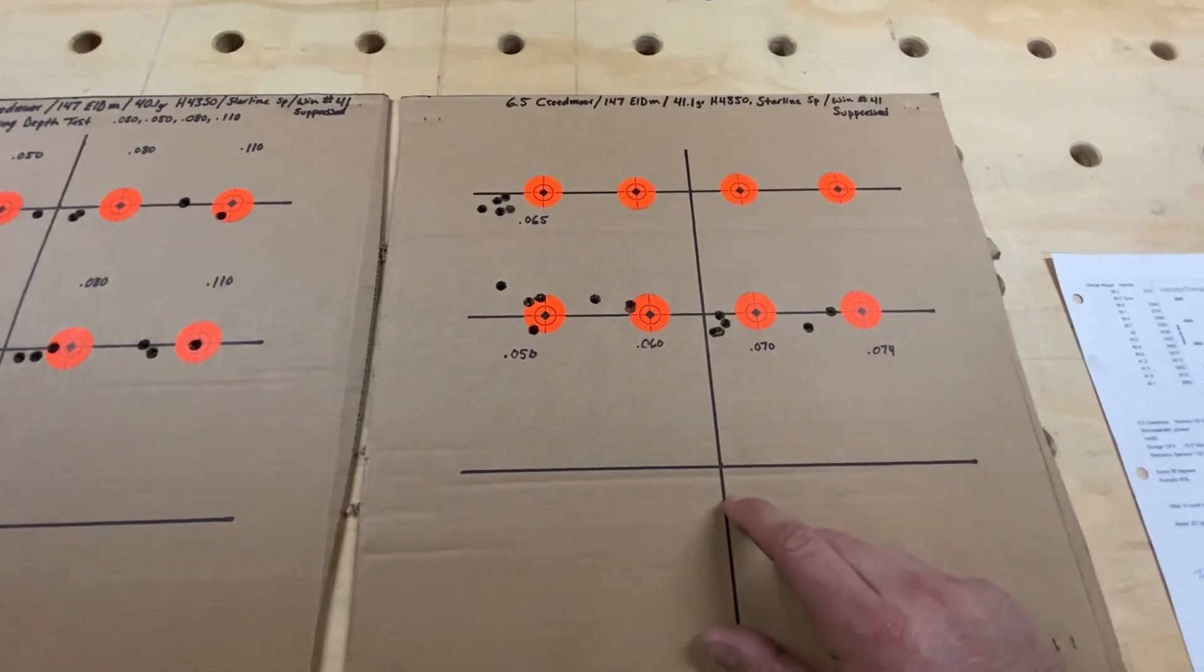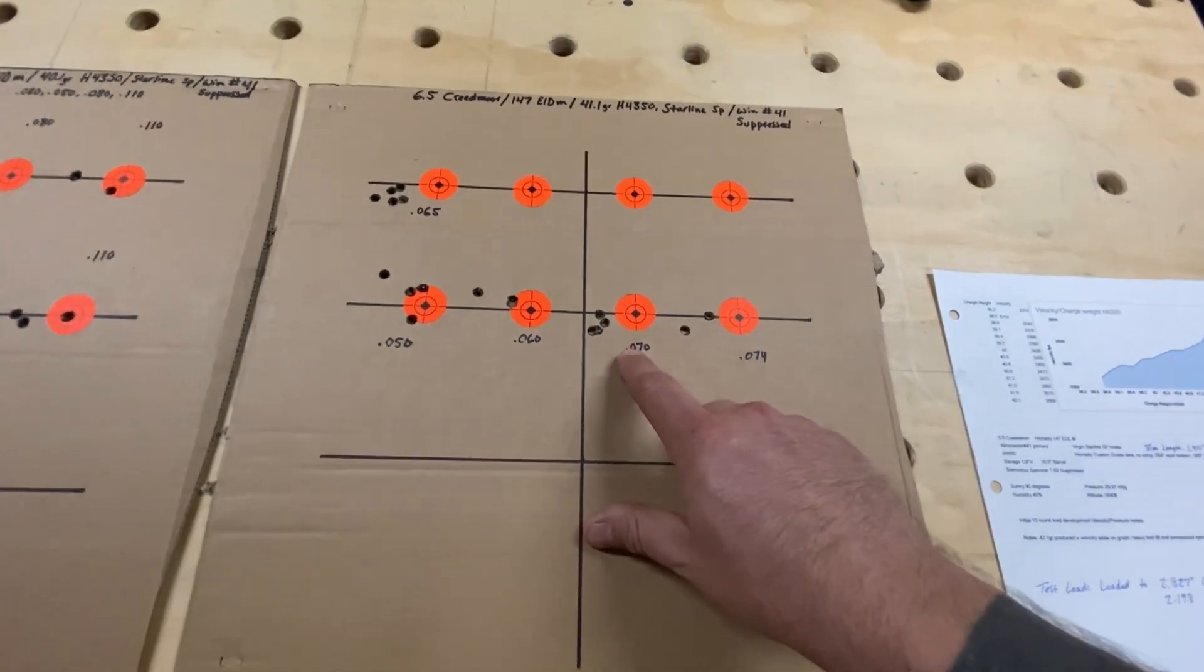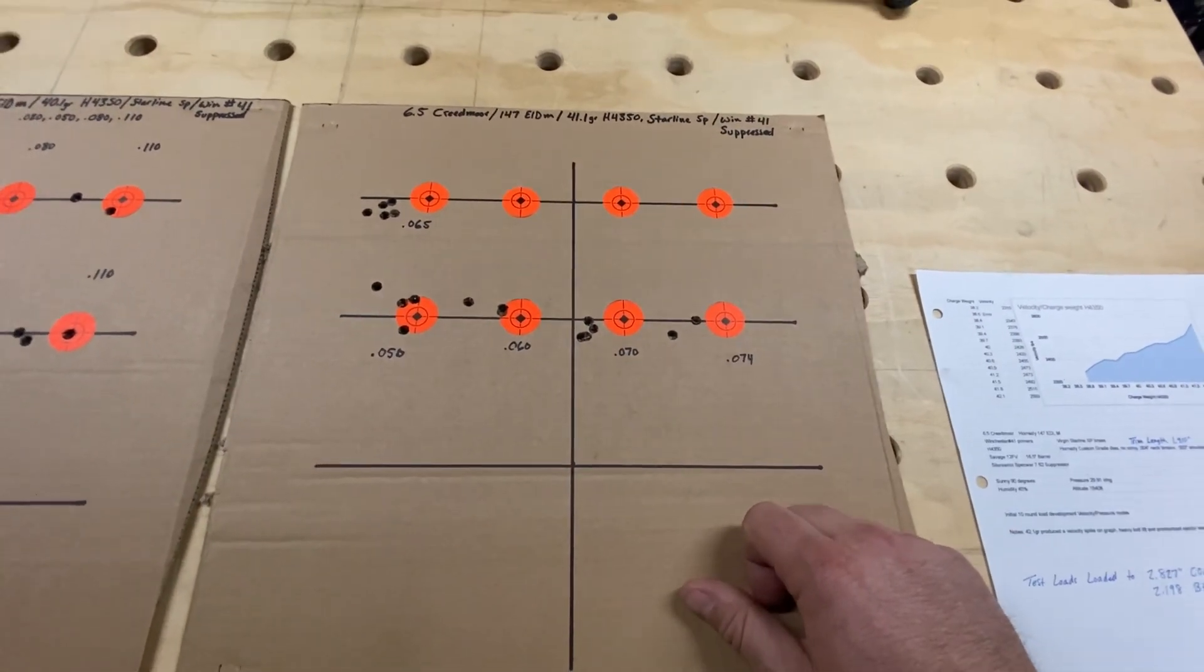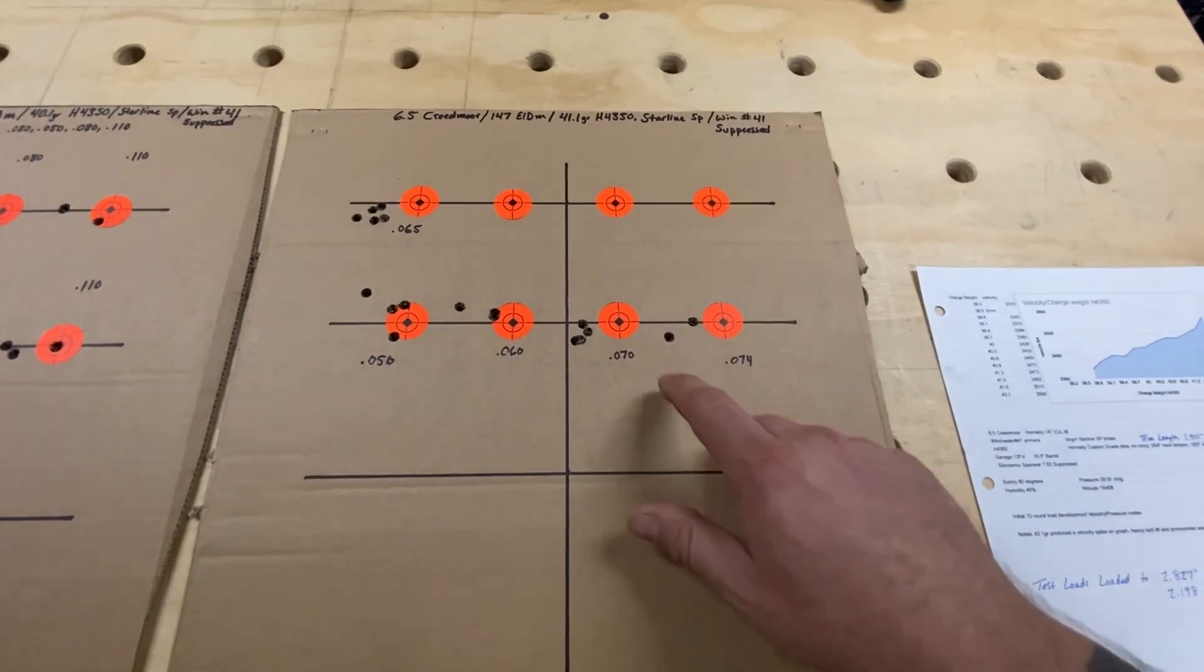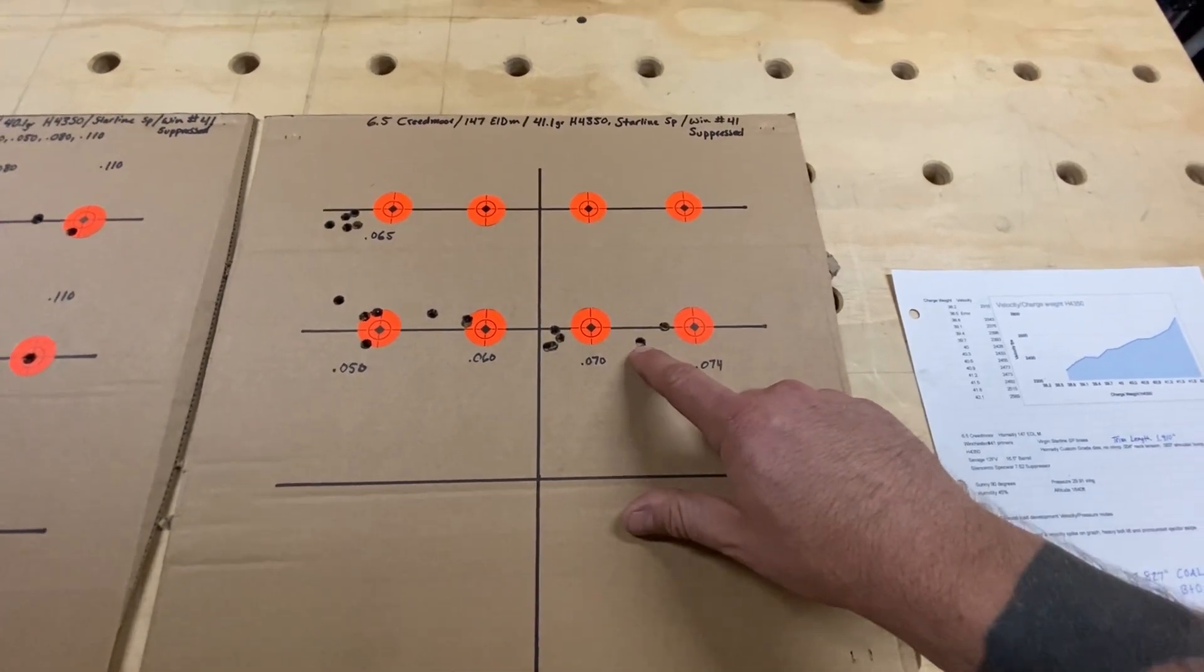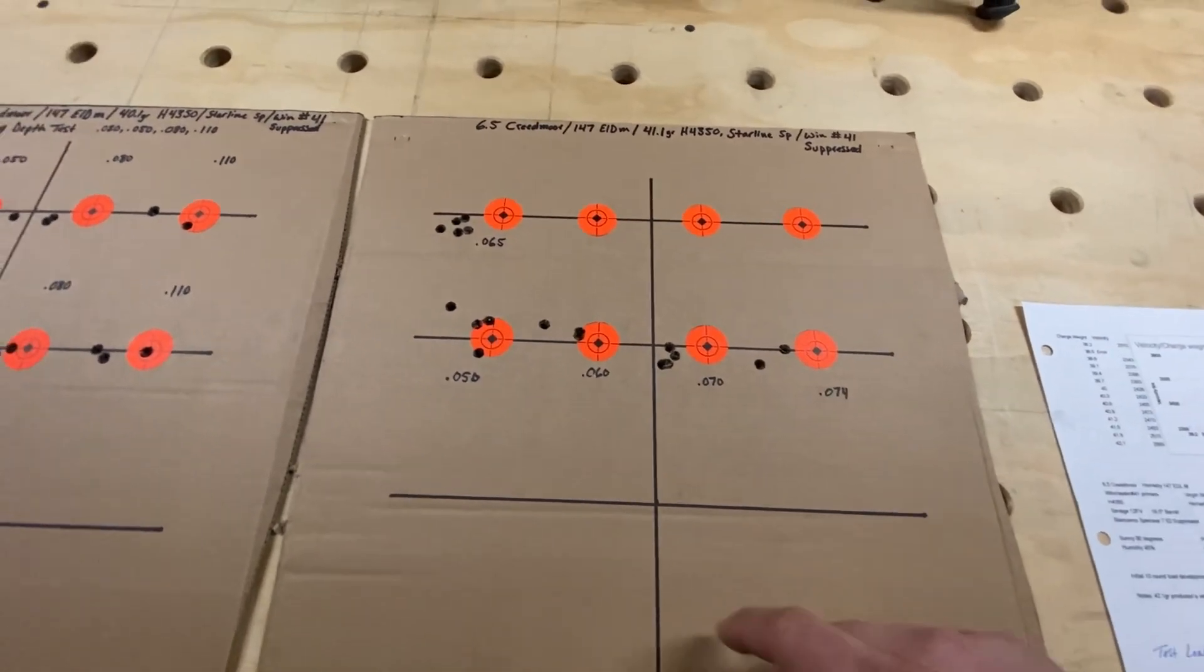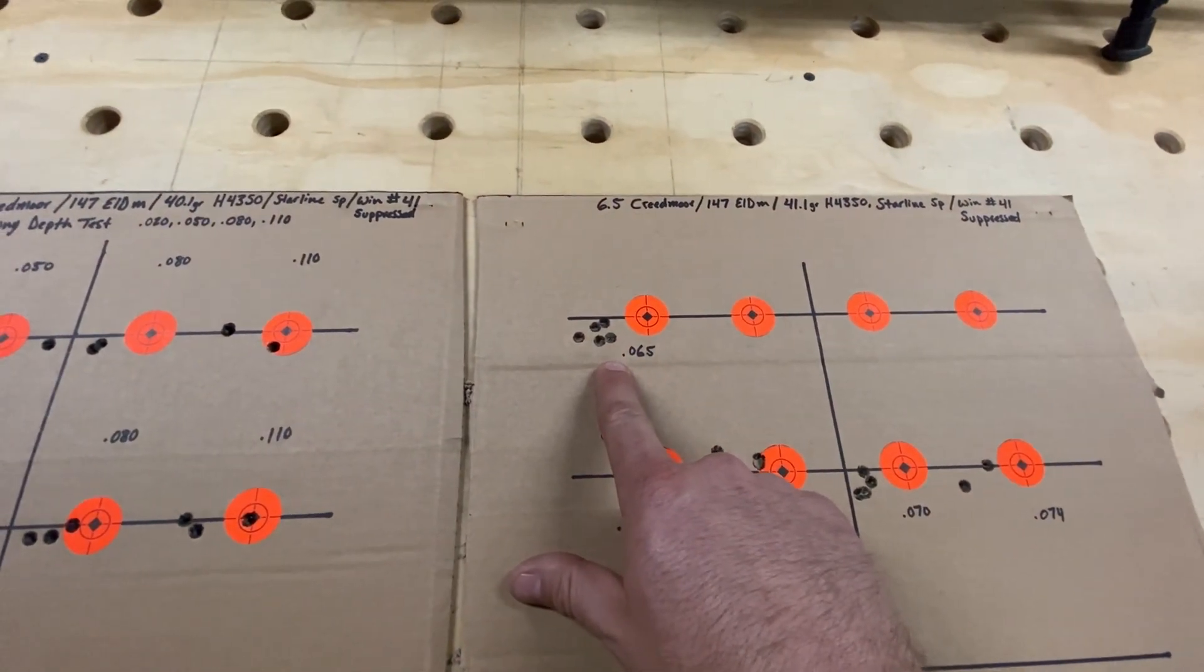There's three shots. Went to 70. I shot three looked really good. So I loaded another one up to shoot here four. Looked really good. So I'm thinking, all right, I'm going to kind of see how big this node or this seating depth window is. So I went up to 74 thousandths shot two and wasn't super impressed with that. So I decided to go back the other direction and I loaded up and shot five at 65 thousandths off the lands.